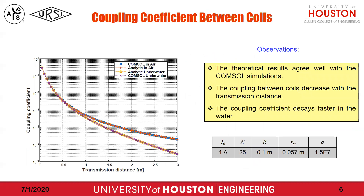In order to validate the accuracy of the coupling coefficient, we compare the theoretical results with simulation results. We calculate the coefficient both in air and in seawater, with the parameters listed in this table. In the left figure, we can see good agreement between the simulation and the theory. We also find the coupling coefficient decreases as the transmission distance increases, due to weaker field strength. We also notice that the coupling coefficient decays faster in water than in air, because seawater is lossy.